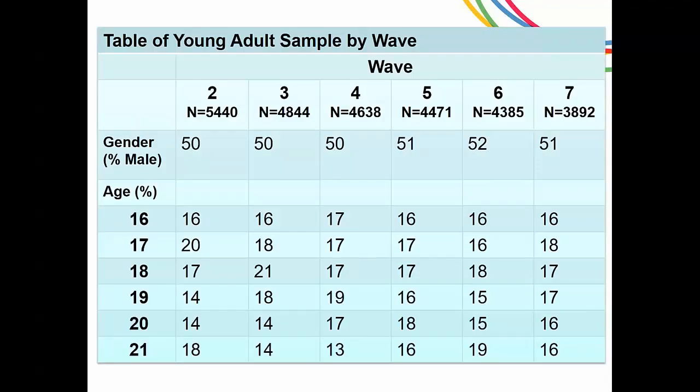Here is a table of the young adult sample from Wave 2 through 7, with a breakdown by gender and age across the waves. Just a quick note about both of these tables: the percentages are weighted percentages and the numbers are raw numbers. If you have any questions about how many individuals participate across numbers of waves, I can give that to you afterwards.